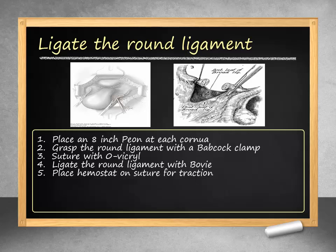We can now begin the hysterectomy portion of the case. First, we identify the round ligament. An 8-inch peon clamp is placed at the cornua to aid in uterine retraction, and another clamp is placed on the contralateral side. The round ligament is then grasped and elevated with a Babcock clamp. Vicryl suture is then placed around the round ligament laterally. While grasping the proximal portion of the round ligament, it is incised with bovie electrosurgery. A hemostat is placed on the suture of the round ligament to be used for retraction later.